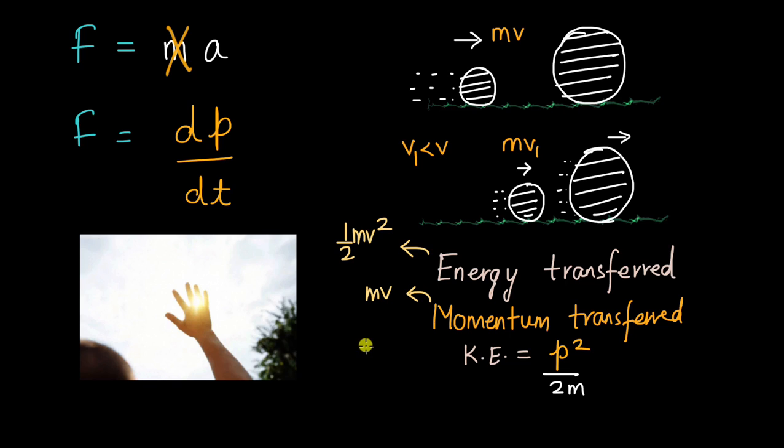But if we think about in this way, that is, whenever there is some energy transfer, there is some momentum transfer that goes with it. And that is what's happening in the case of light. And we always learn that momentum is given by MV. But it is not necessary for a thing to have mass to have momentum. Even without mass, waves can have momentum and particularly electromagnetic waves.